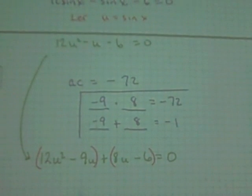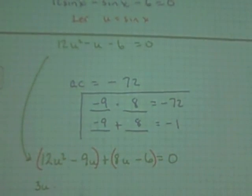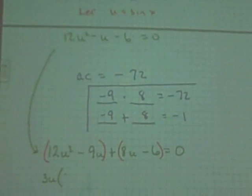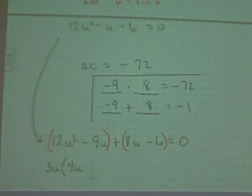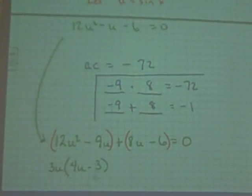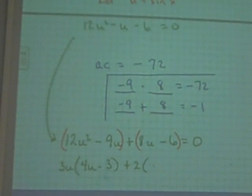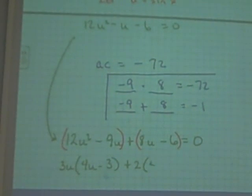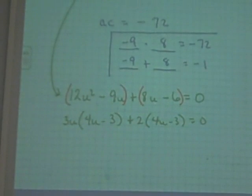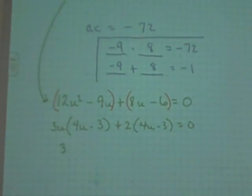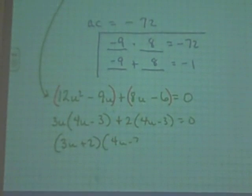What's in common in the first table? Three U. What goes in the parentheses? Four U minus three. What's in common in the second parentheses? Two. What goes in the parentheses? Four U and negative three. So how does this factor? Three U plus two in one set of parentheses and the other, four U minus three.